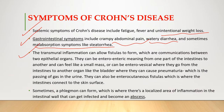Due to transmural inflammation, fistula formation is seen in Crohn's disease. Fistulas are communications between two epithelial organs. There are three kinds of fistulas in Crohn's disease. The first is enteroenteric — from one part of the intestine to another — and if palpated, it can feel like a small mass.